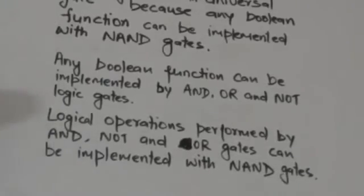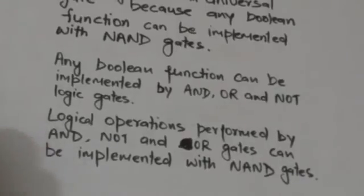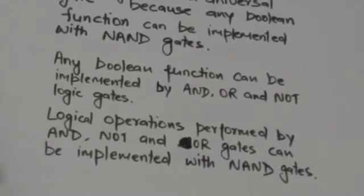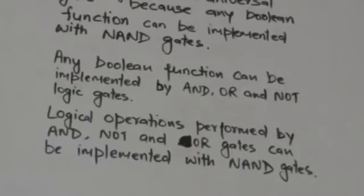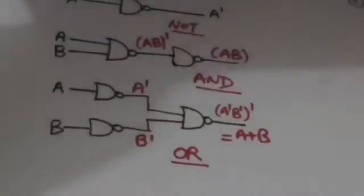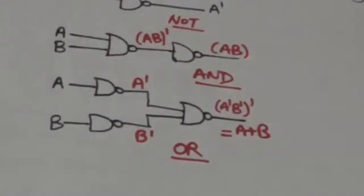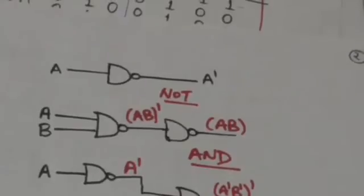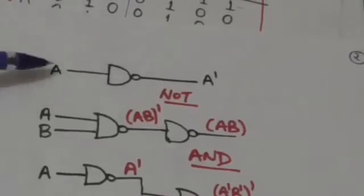So now we will prove how we can implement these logical operations — AND, NOT, and OR — by NAND gates. A NAND gate with a single input behaves as a NOT gate. If its input is A, then its output would be the complement of A.